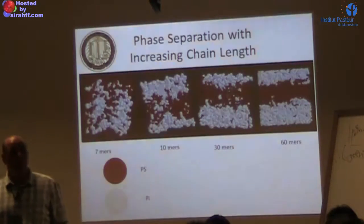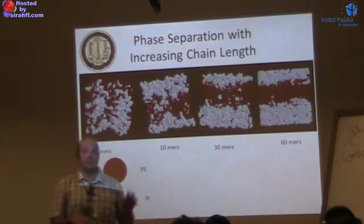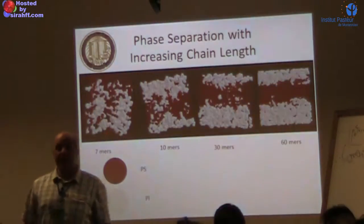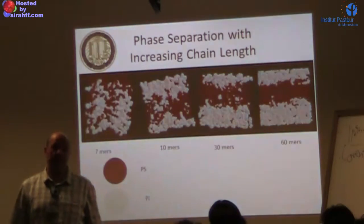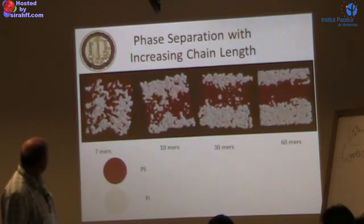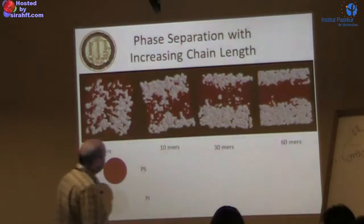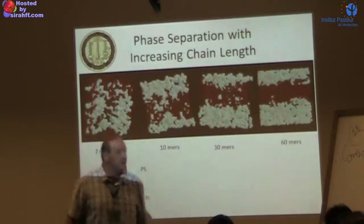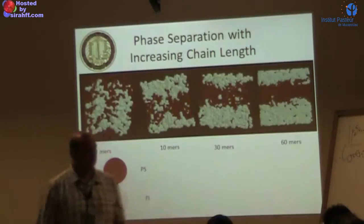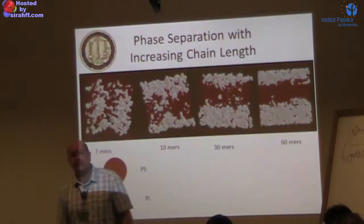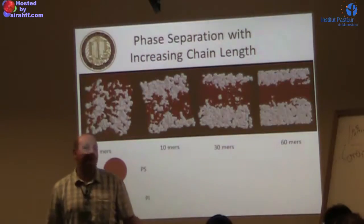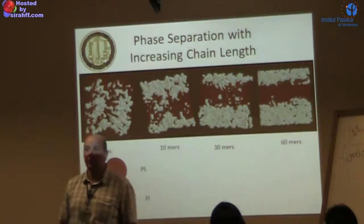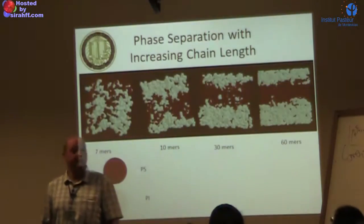These are snapshots of the system: red is PS, white is PI, all at 50-50 by mole. At 7-mers they are nicely mixed; at 10-mers there is still reasonable mixing but an indication of demixing. For 30-mers it's essentially lamellar morphology, and for 60-mers it is clearly lamellar. Lamellar morphology is expected when the two polymer numbers are equal, combined with periodic boundary conditions. We can also get cylindrical or spherical morphologies by varying chain length ratios.